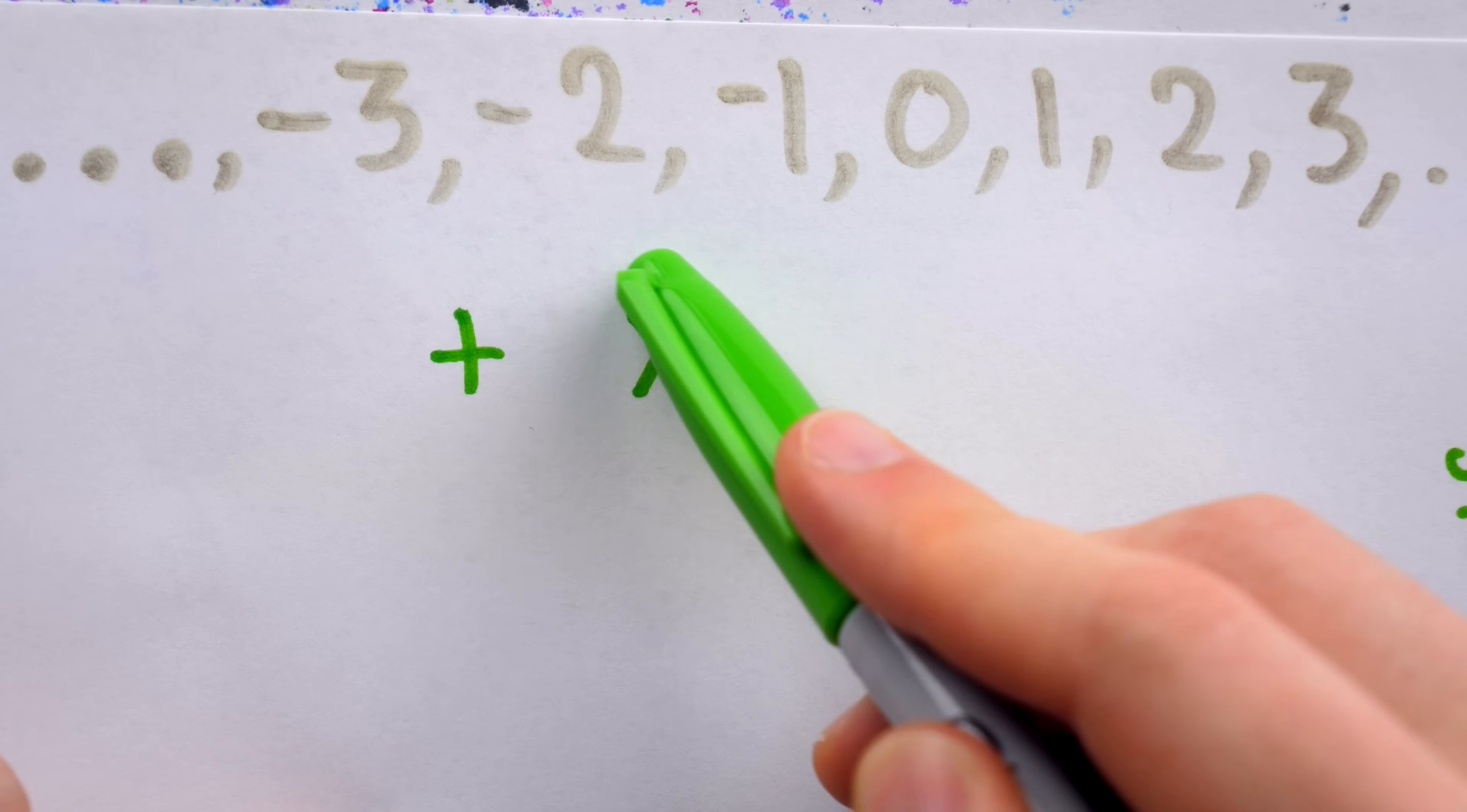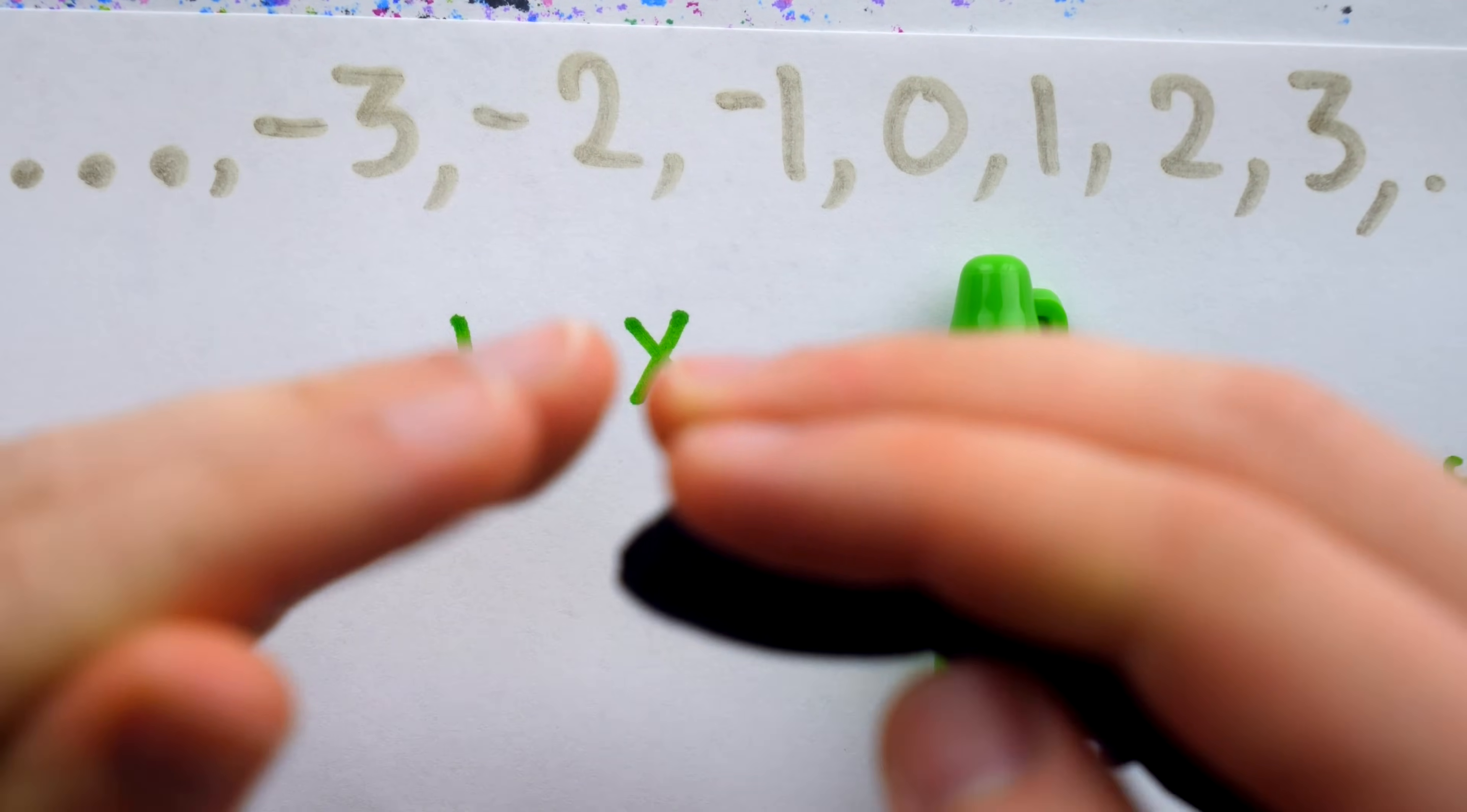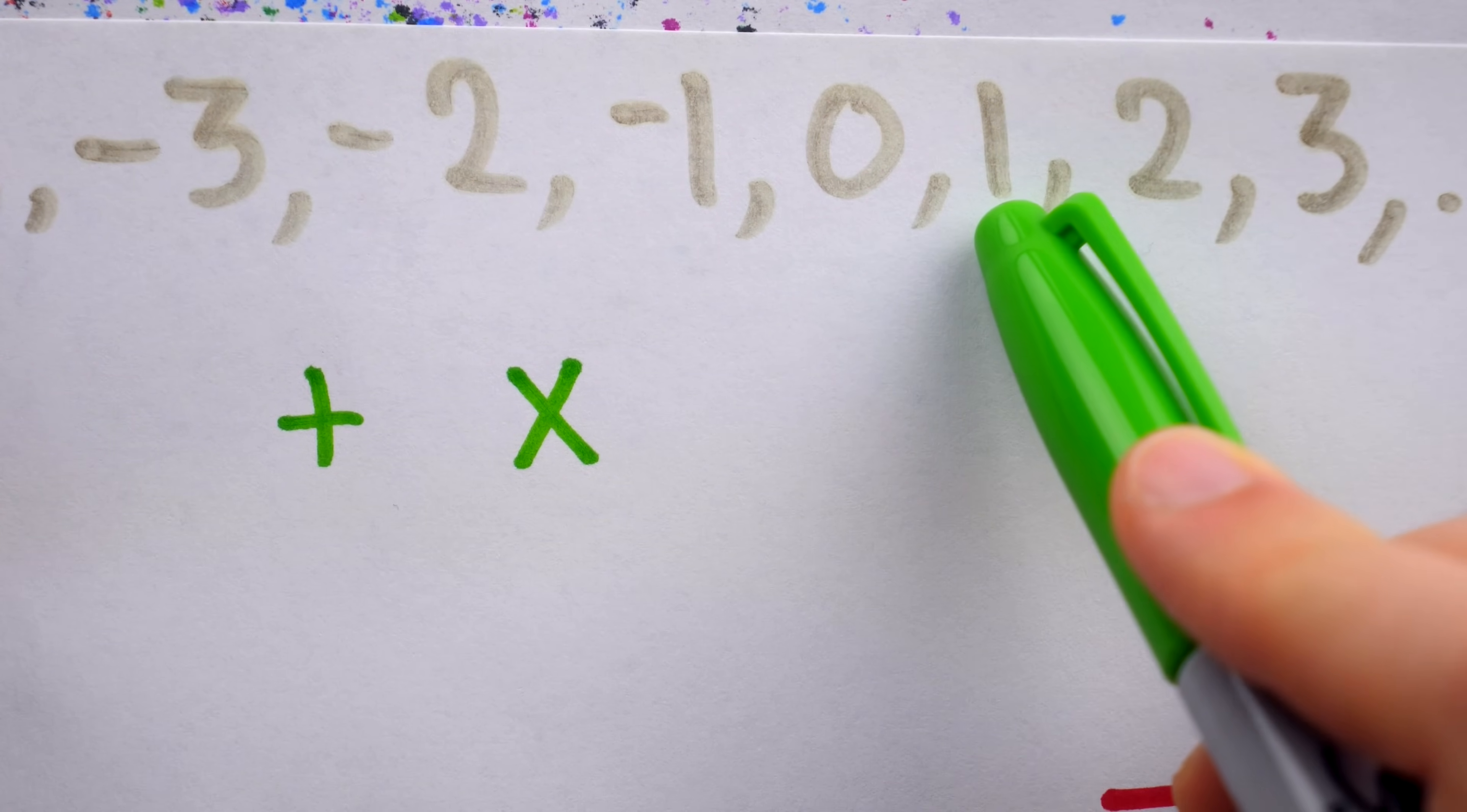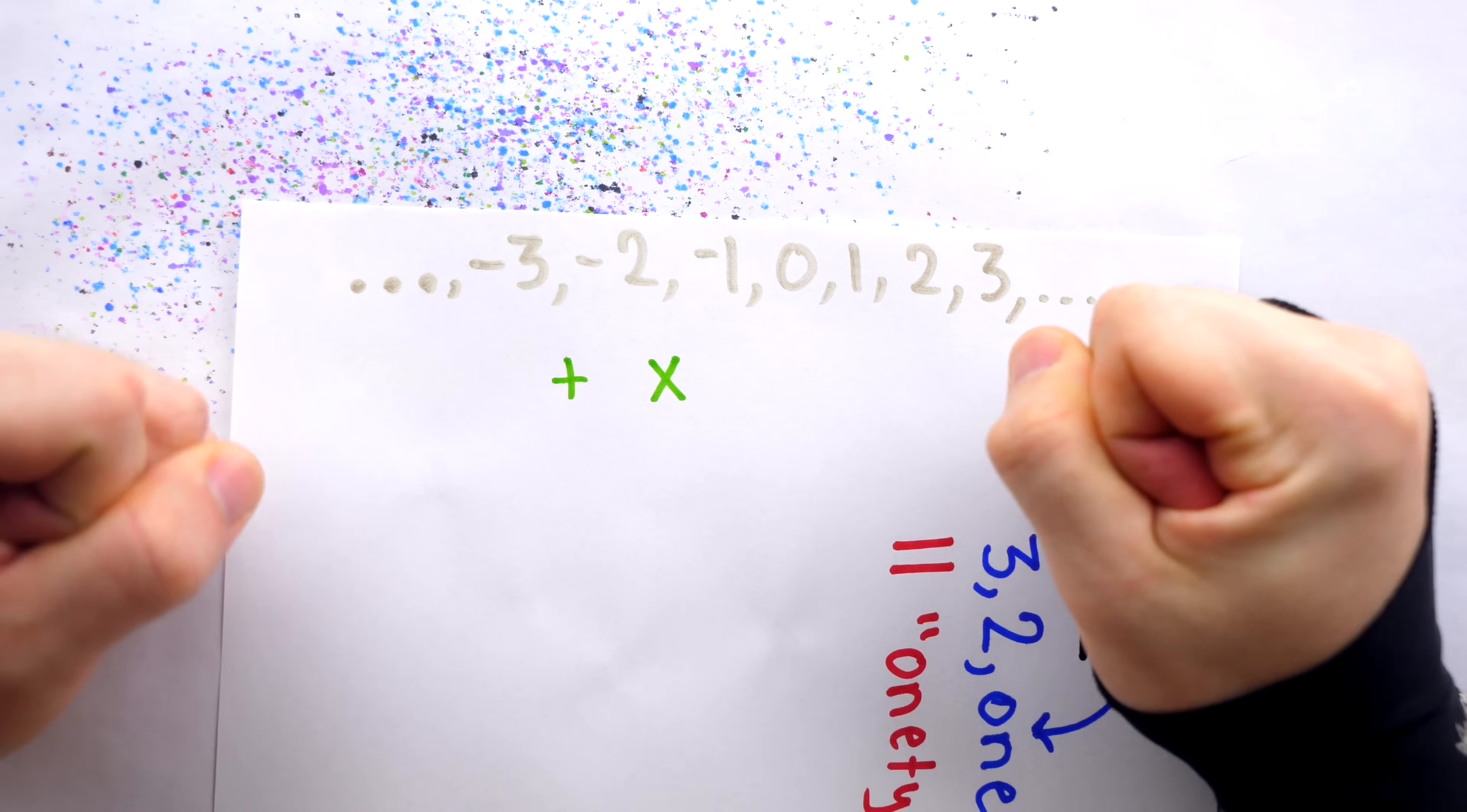The integers have all sorts of great properties with these operations. For example, commutativity, the order of addition, and the order of multiplication doesn't matter. There's also the property of closure. If we add any two integers, or multiply any two integers, it's closed. We stay within the integers. Not only do we have our beloved multiplicative identity, unity, the number one, but we also have an additive identity, zero. We can add zero to anything, and it doesn't change.